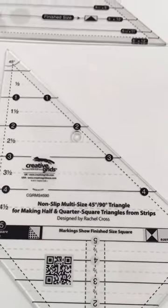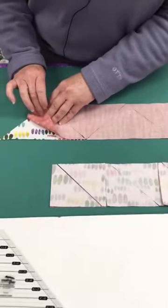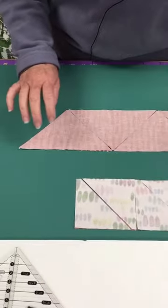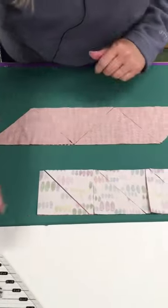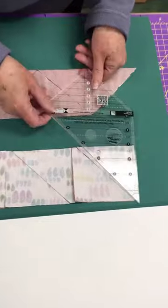The neat thing about both of these tools is they cut them off of a strip set. So you'll place your fabrics right sides together, your two fabrics. And if you're cutting half square triangles, you will use this side of the ruler and you will cut one.